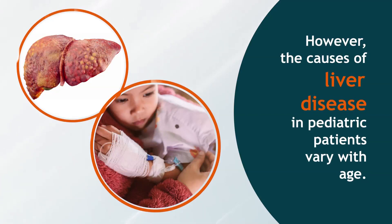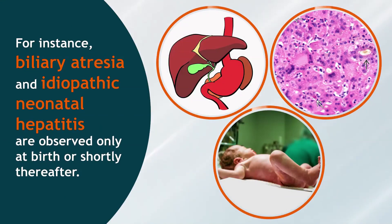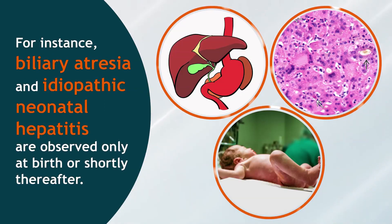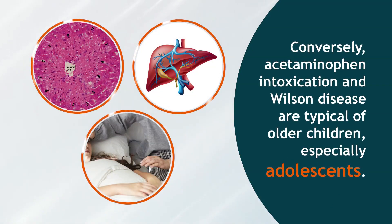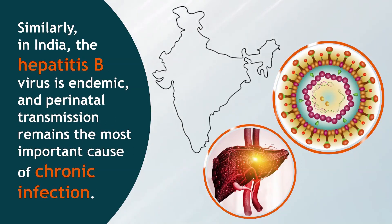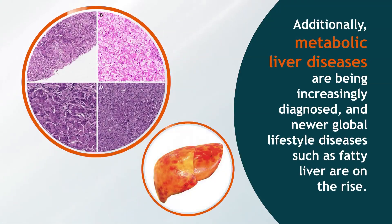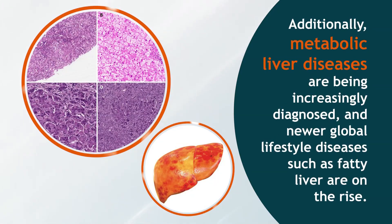The causes of liver disease in pediatric patients vary with age. Biliary atresia and idiopathic neonatal hepatitis are observed only at birth or shortly thereafter. Conversely, acetaminophen intoxication and Wilson disease are typical of older children, especially adolescents. In India, hepatitis B virus is endemic and perinatal transmission remains the most important cause of chronic infection.